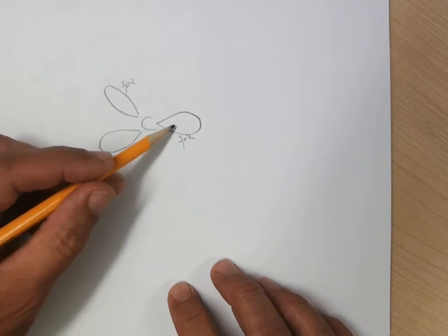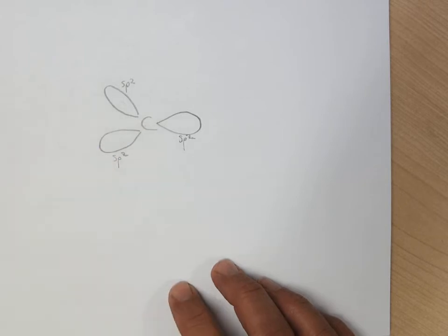And the hybrid orbitals, and this is a really important thing for me to understand, is hybrid orbitals will either form sigma bonds, single bonds, or they will accommodate lone pairs of electrons.